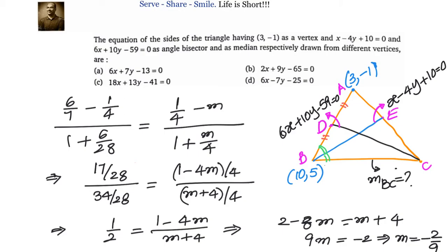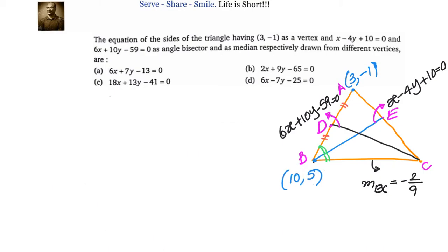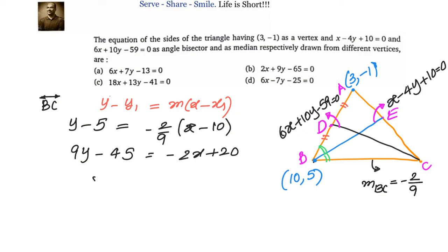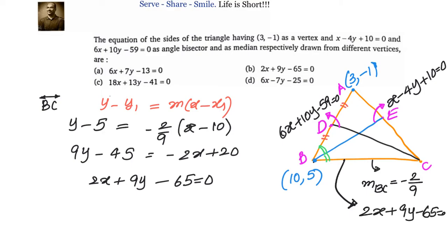Now that we know the slope of BC is -2/9 and coordinates of B = (10, 5), using the point-slope form: y - 5 = -2/9 · (x - 10). Simplifying: 9y - 45 = -2x + 20, giving 2x + 9y - 65 = 0. So the equation of BC is 2x + 9y - 65 = 0.